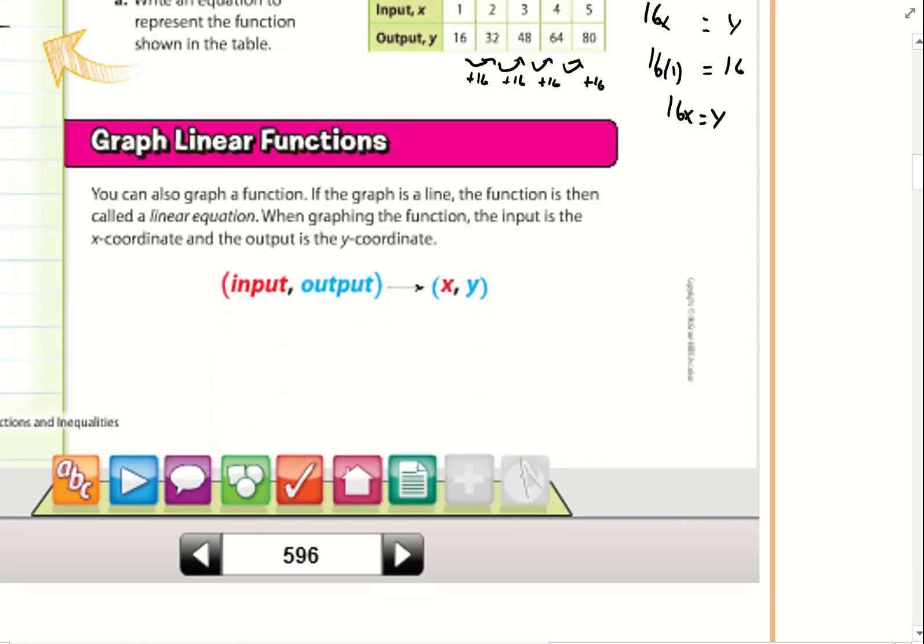You can also graph a function. If the graph is a line, the function is then called a linear equation. When graphing the function, the input is the x-coordinate and the output is the y-coordinate. My input is x, my output is y. This is called an ordered pair. This is for when I'm graphing.